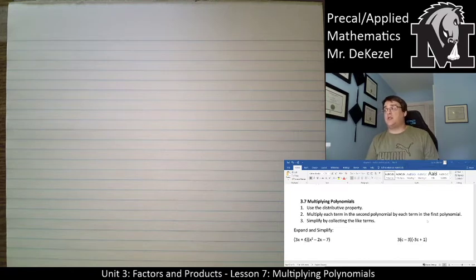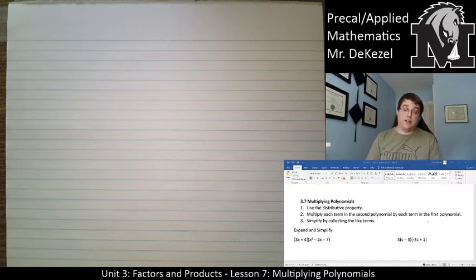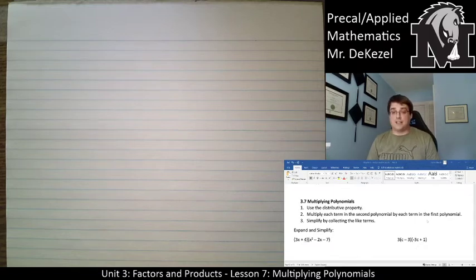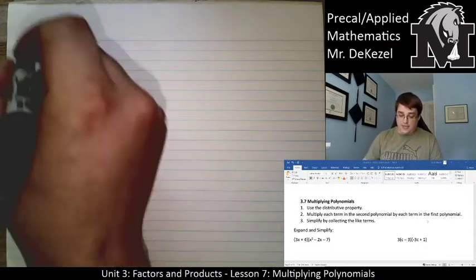We're going to use the distributive property which is essentially a version of foiling. If you are decent at foiling binomials this will be absolutely no problem for you. You're essentially going to multiply every term in one bracket by every term in another bracket. That's all there is to it. Let's jump right in.